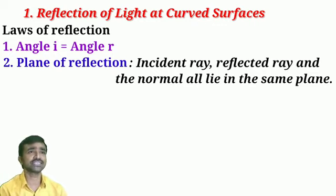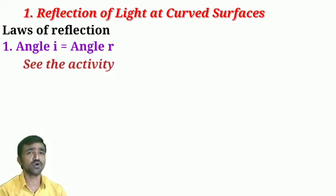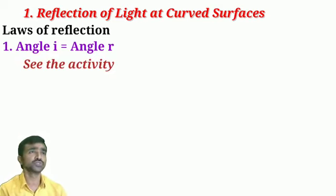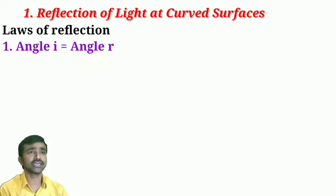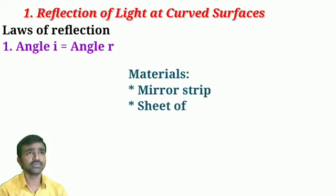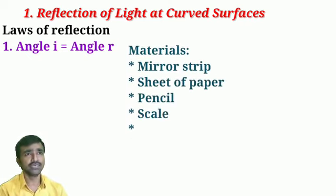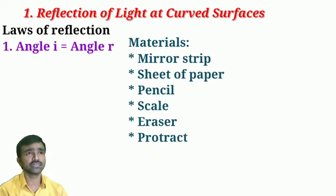First I will discuss the first law of reflection: angle of incidence is equal to angle of reflection. To demonstrate this, we will conduct a small activity. The materials needed are: one mirror strip, one white paper, pencil, scale, eraser, protractor, etc.